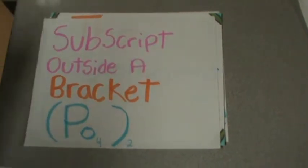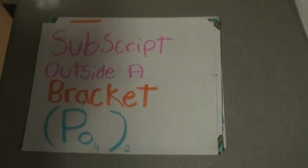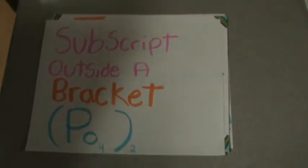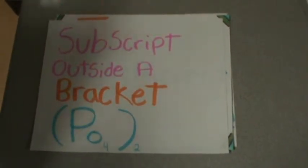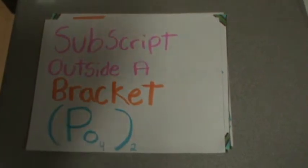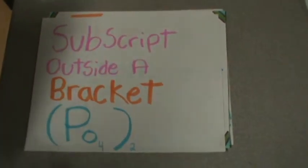For example, (PO4) with subscript 2. P is phosphorus, O is oxygen. P is 2 because 1 times 2 equals 2. Oxygen is 8 because 4 times 2 is 8.